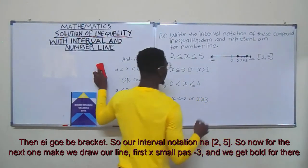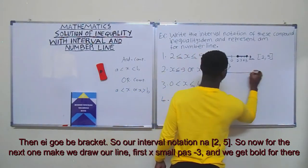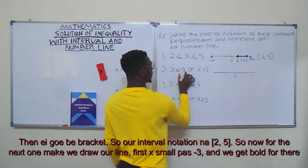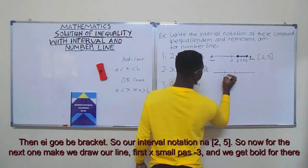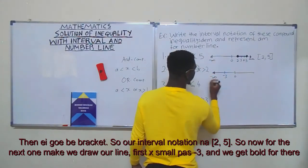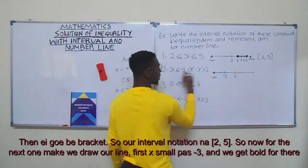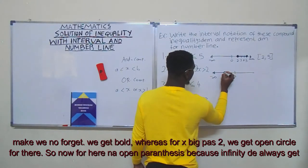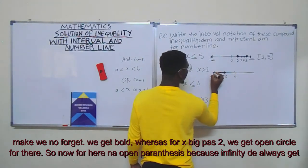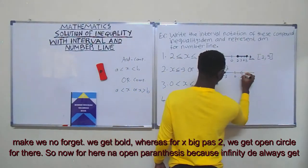For the next one, we'll draw our number line. We have x less than minus three, and x greater than two. For x less than or equal to minus three, we get a closed circle. For x greater than two, we get an open circle.